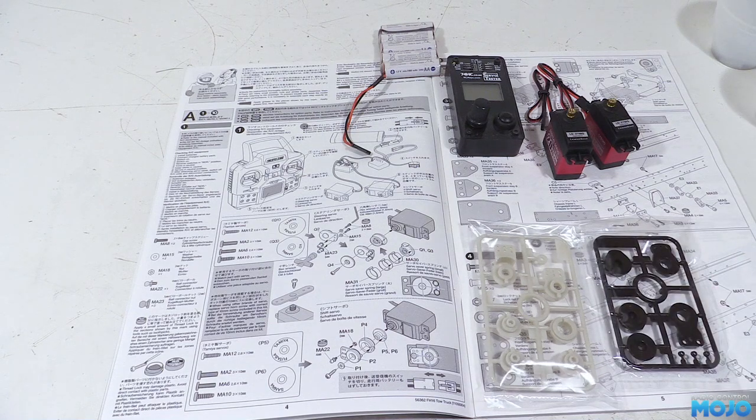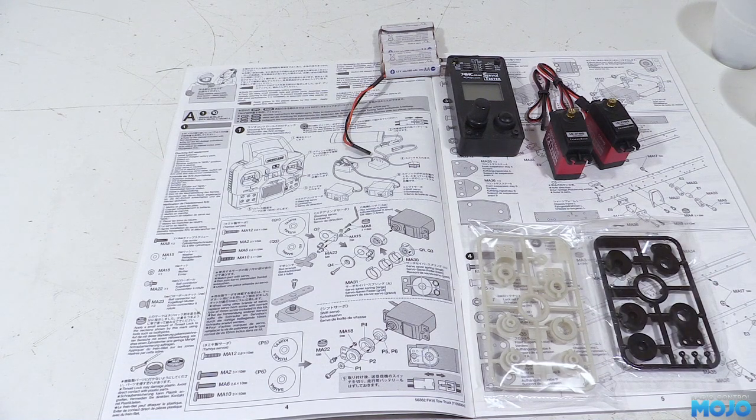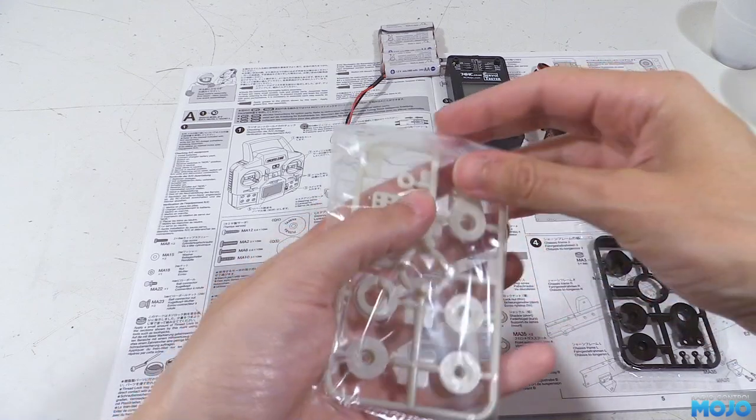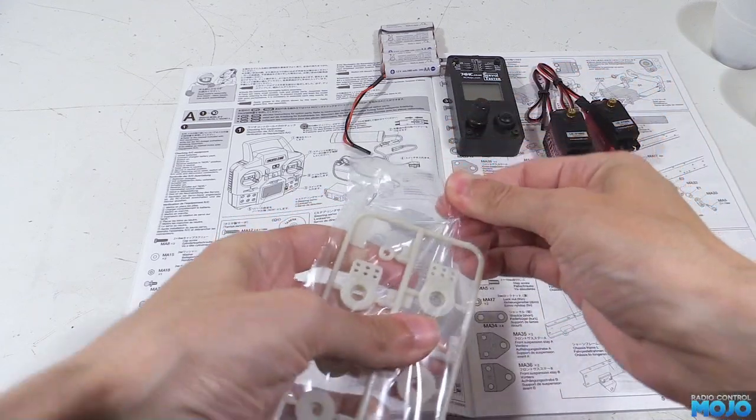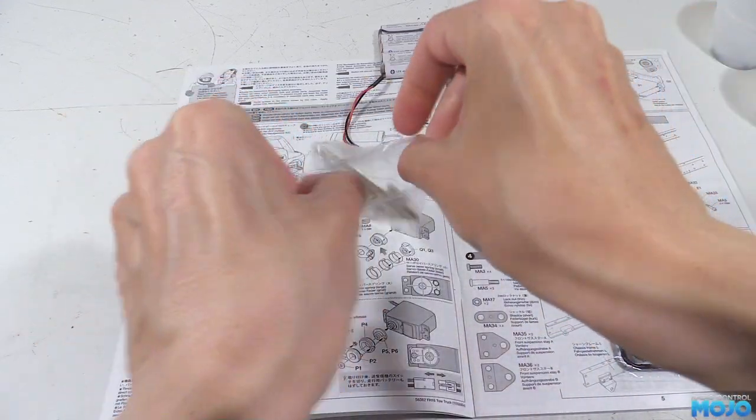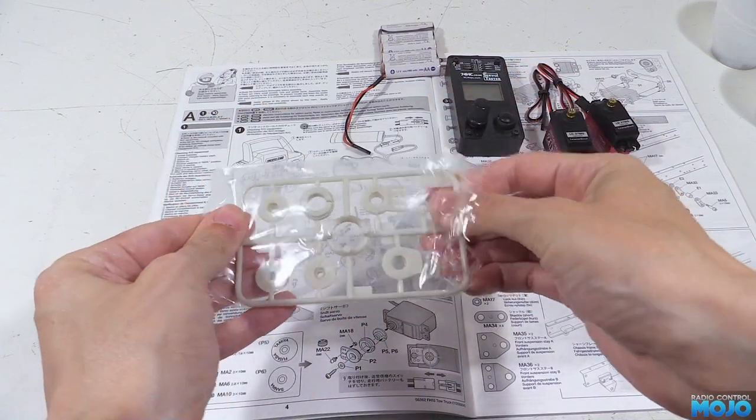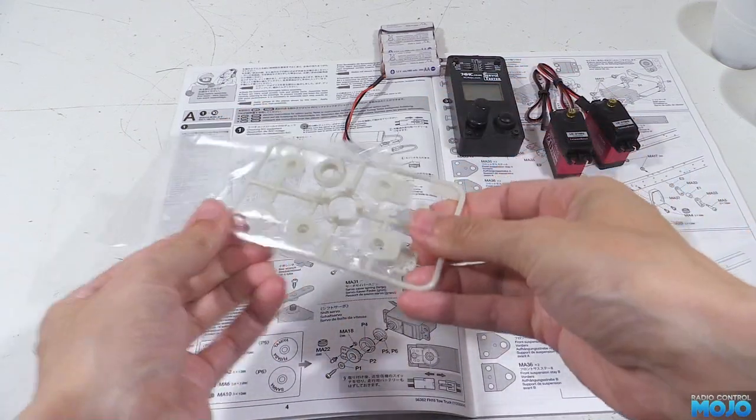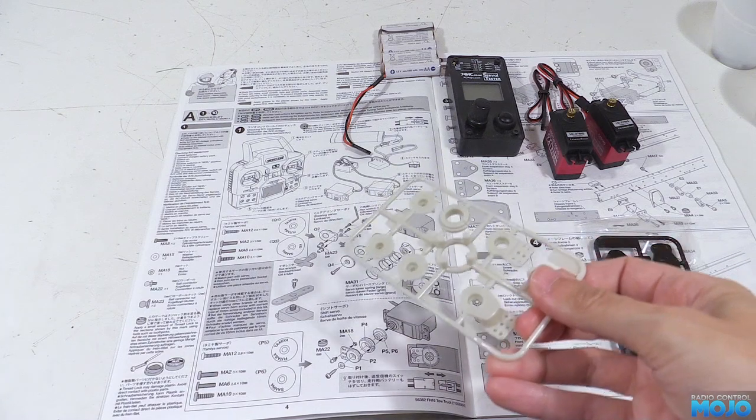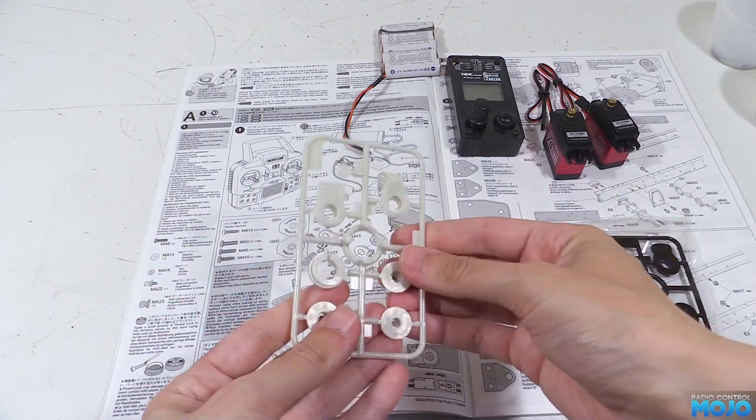Next we need some plastic parts. In this case we need the Q and P parts trees. Each part in the diagram has a part number. For instance, the gear shift arm is P2, so that's parts tree P and part number 2. Each tree is marked with its own letter.